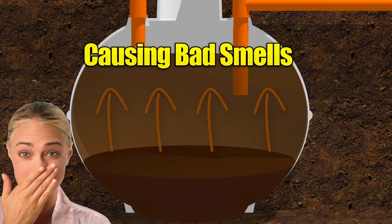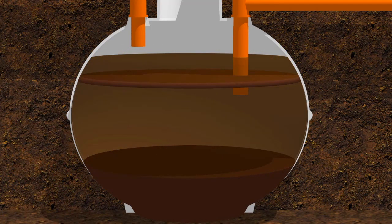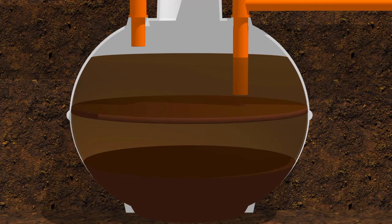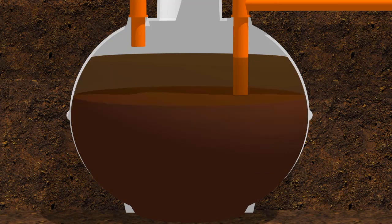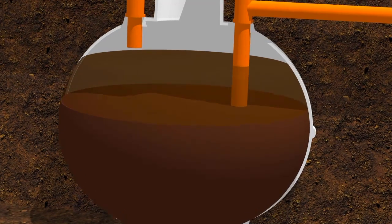But it doesn't stop there. The fat and the grease and the sludge continue to build up inside the septic tank until eventually it reaches the outlet pipe.